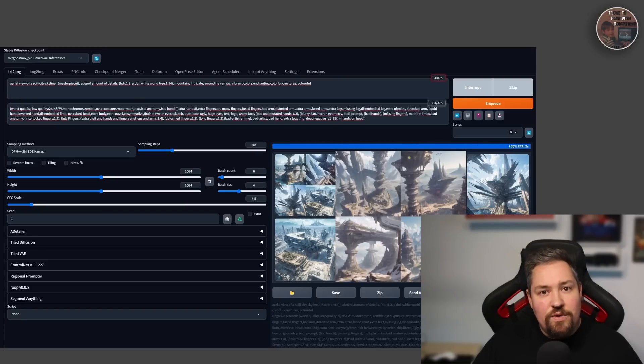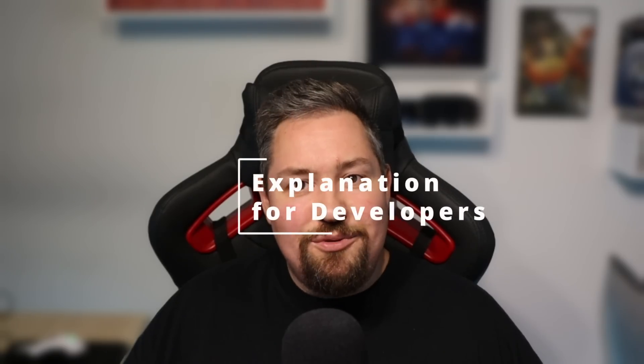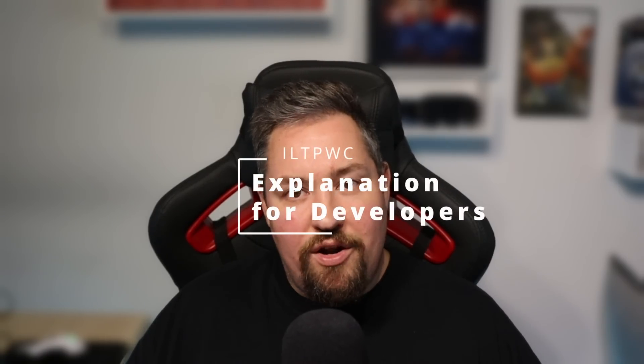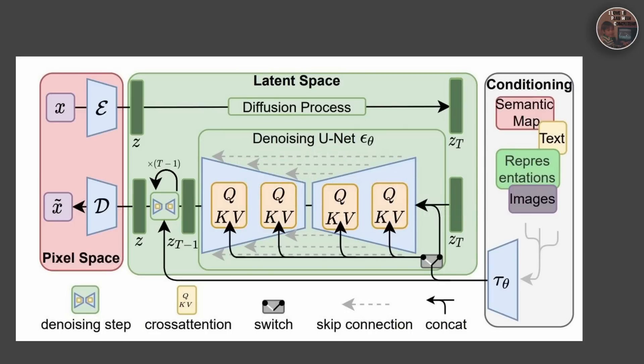Stable diffusion is a type of generative model used in machine learning. It models the data distribution in a high-dimensional space using a process called diffusion, which involves transforming a simple distribution into a complex one. The model starts with a prior distribution, often something simple like a multivariate Gaussian. It then applies a series of learned transformations to the distribution, each one nudging it a bit closer to the target distribution.